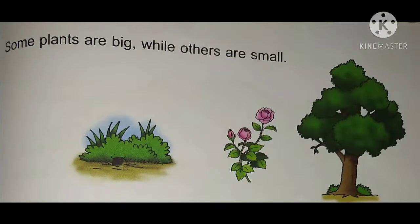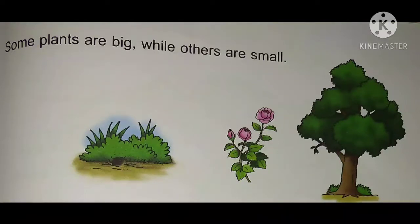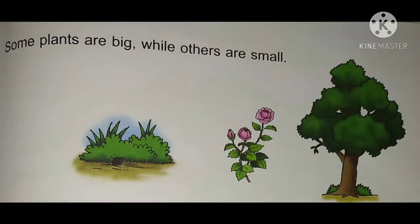Some plants are big while others are small. You can see in the picture there are some plants that are big and some that are small. For example, grass and bushes are very small, but if we talk about big trees, the tree is very big. So some plants are small and some plants are big.